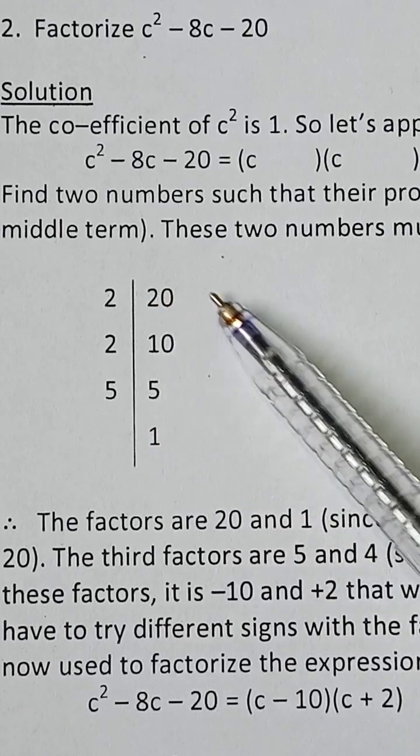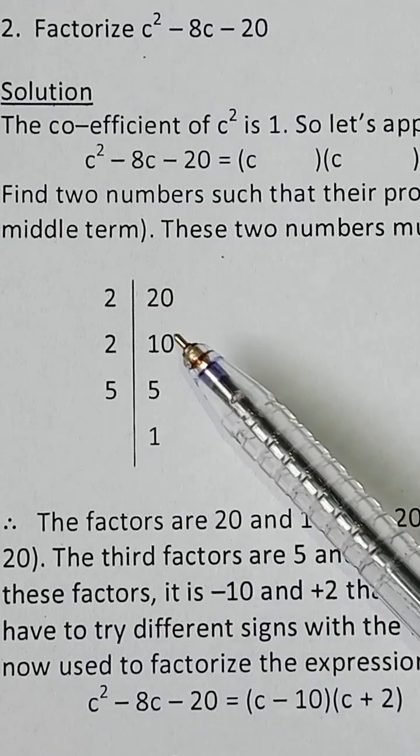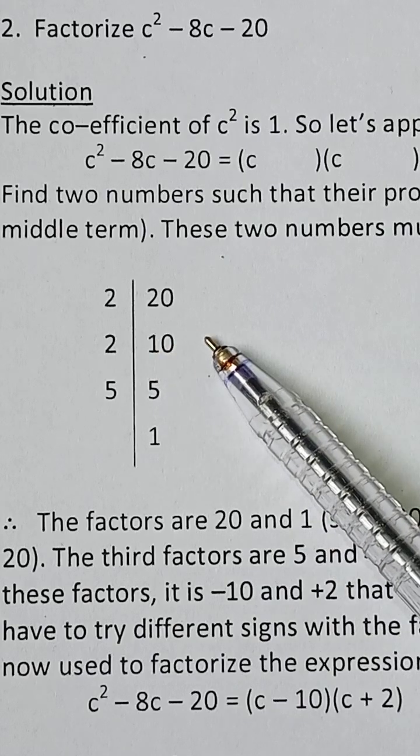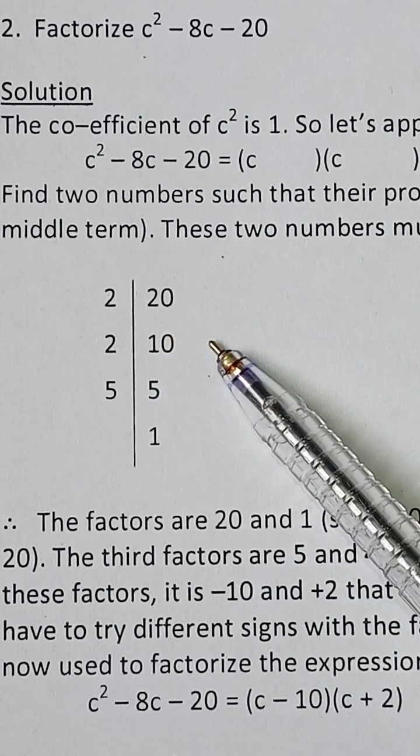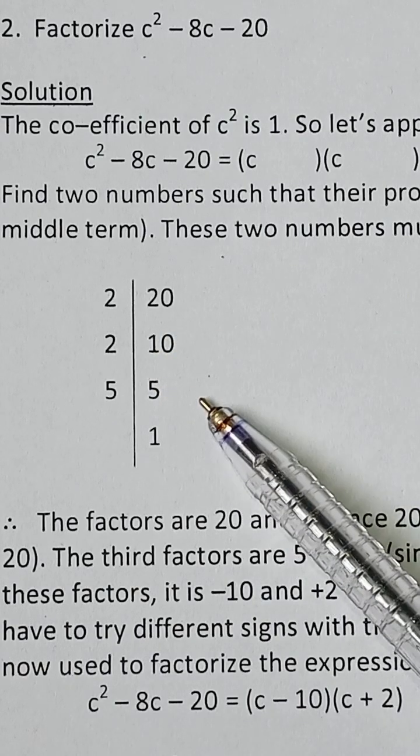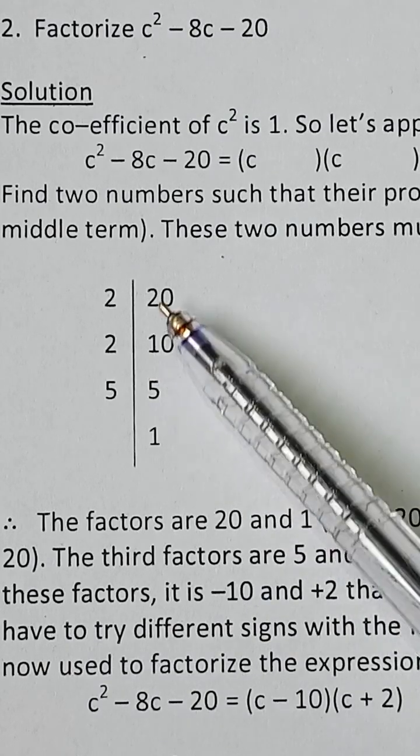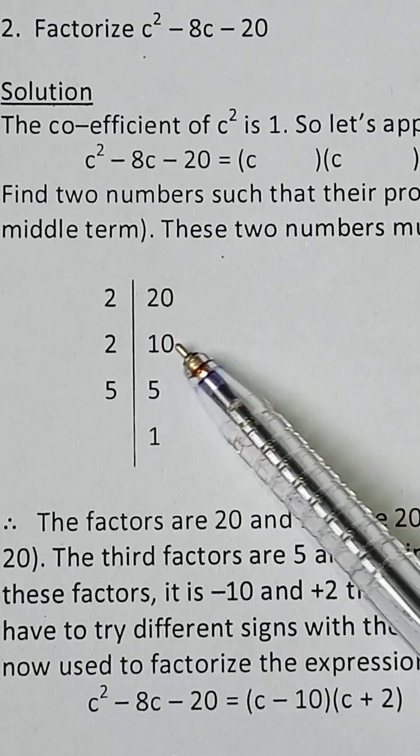20 times 1, that's 20 and 1; 10 times 2 will give you 20, so 10 and 2; and 5 times 4 will give you 20, so 5 and 4.